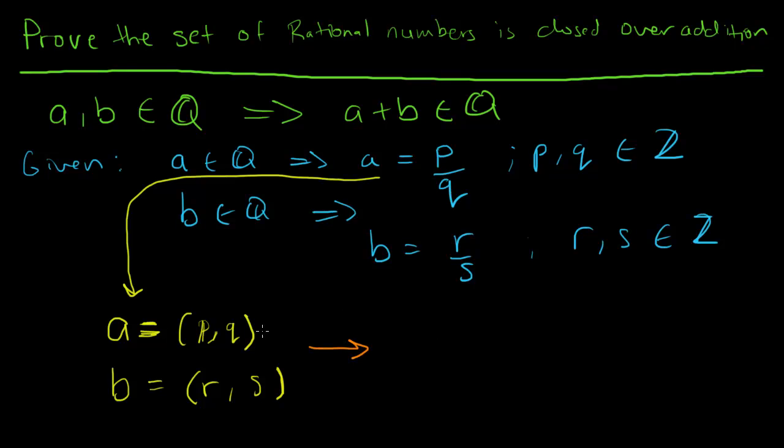If I represent it this way, then I can do the sum. A plus B would be (P plus R, Q plus S). The P and R sum to give the first element, and Q and S sum to give the second element of the ordered pair.